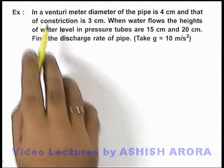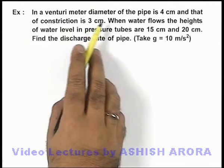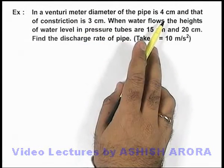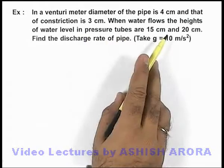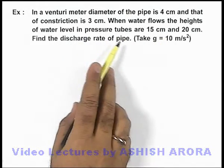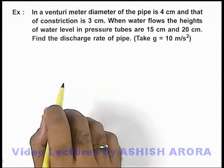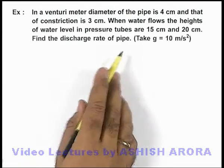In this example, we are given that in a venturi meter, the diameter of the pipe is 4 centimeter and that of constriction is 3 centimeter. When water flows, the height of water level in the pressure tubes are 15 and 20 centimeter, and we are able to find the discharge rate of pipe.